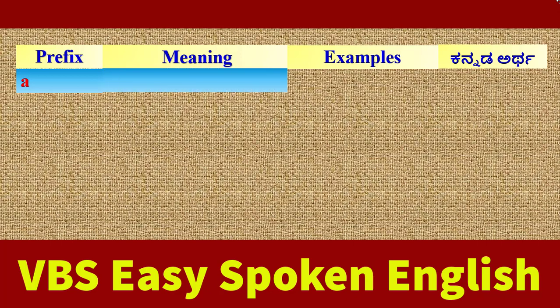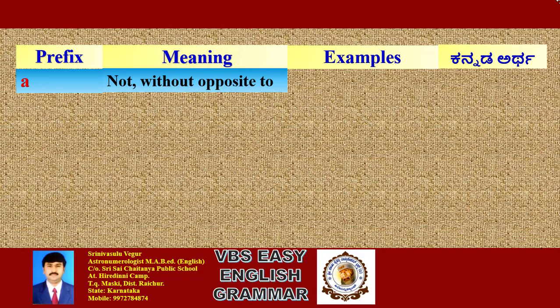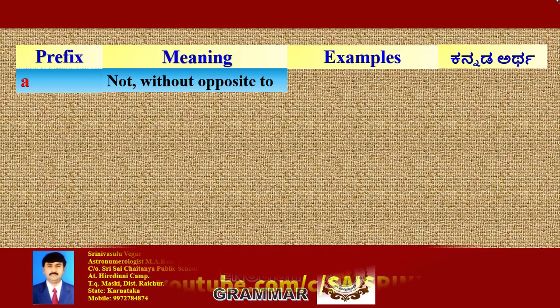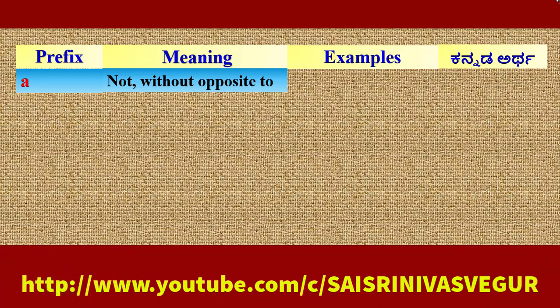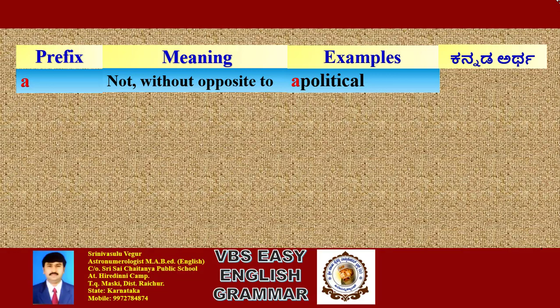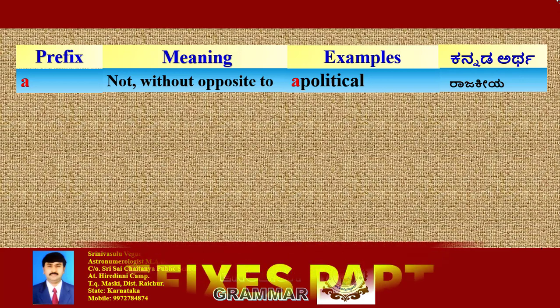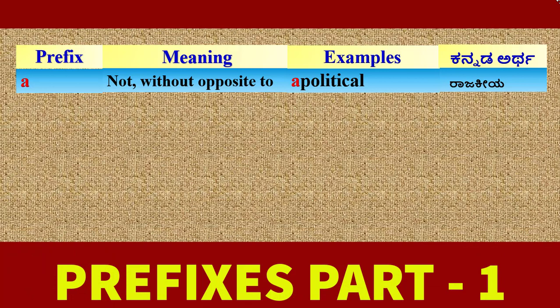Prefix 'A': its meaning is 'not' or 'without', opposite to. Example: Apolitical. 'Political' is a common word. 'Apolitical' — we add the prefix 'A' to the beginning of the word 'political'. Its Kannada meaning is 'Rajakiya alla' — without or opposite to political.